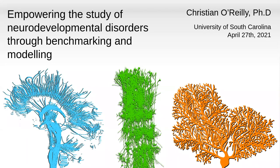Well, I think we should go ahead and get started. I'm Matt Thatcher. I'm the chair of the Department of Computer Science and Engineering here at USC. I just want to thank everyone for joining us. Our speaker today is Dr. Christian O'Reilly. He's a candidate for our faculty position in the intersection of artificial intelligence and neuroscience.